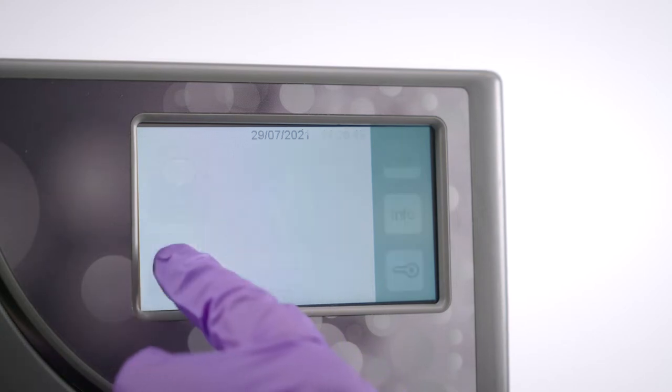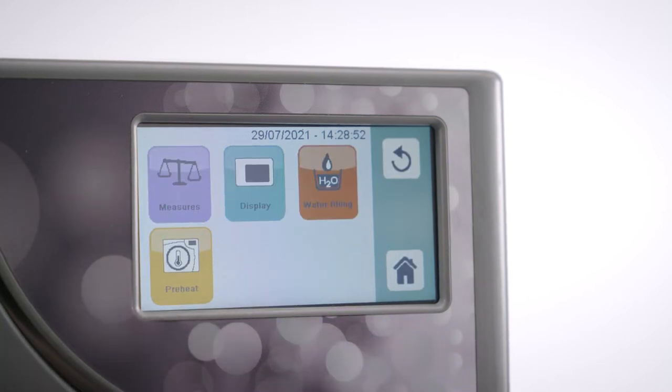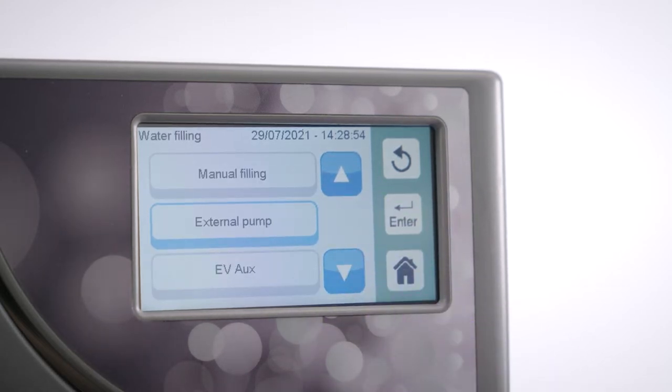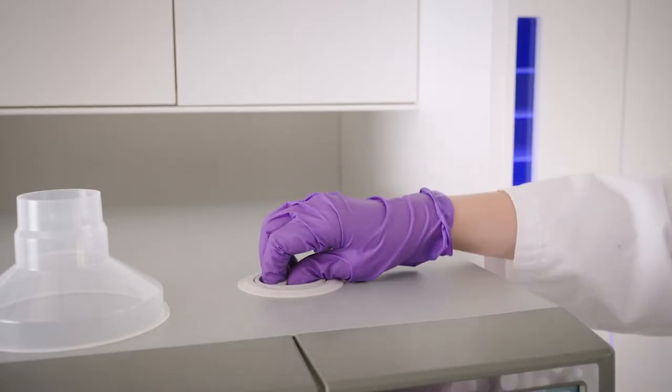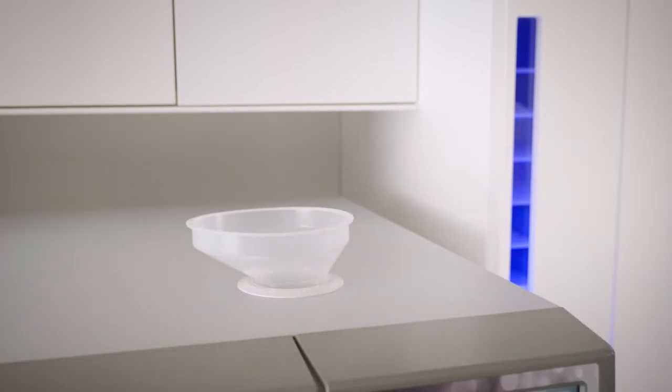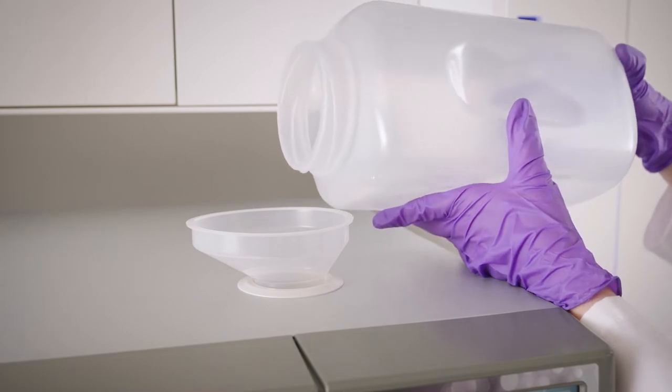Follow these simple steps to select the correct water filling setting. Select the settings icon followed by preferences. Select the water filling icon, which will bring you to a list of manual and automatic filling options. With the unit powered on, manually fill your unit by removing the top cap and use the funnel provided to carefully pour demineralized water into the reservoir.